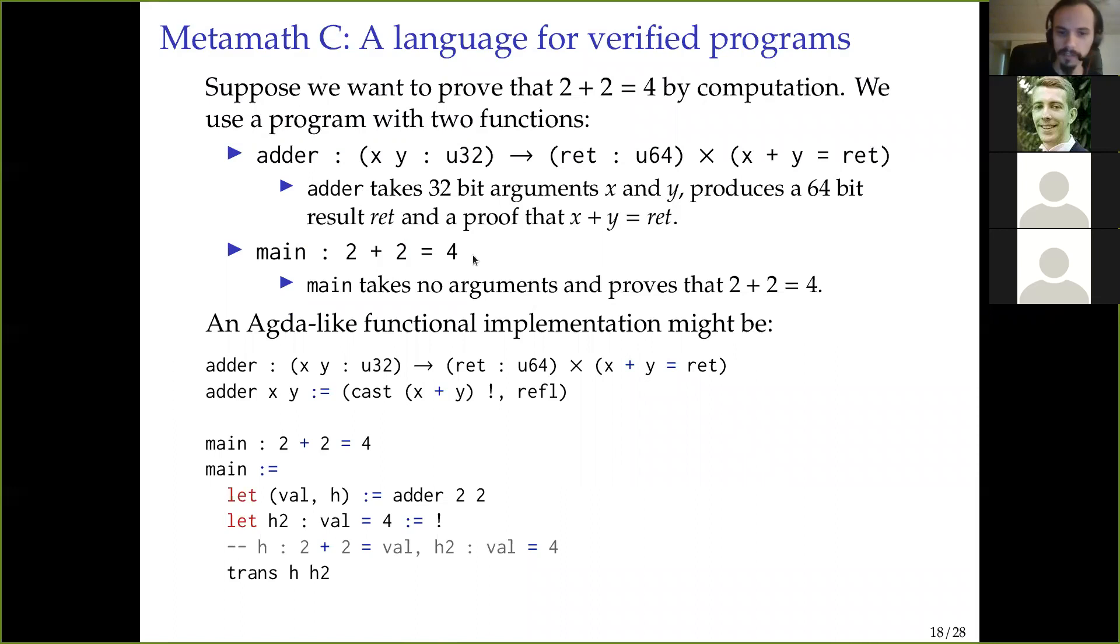And then main is going to take no arguments and prove that 2 plus 2 equals 4. So if we were doing this in a functional programming language, it might look something like this. So adder is taking x and y, and well, for ret, it's just going to return x plus y. The types don't quite match up, so we're going to cast it. This exclamation point here indicates that we're going to produce a proof that this thing actually has that type.